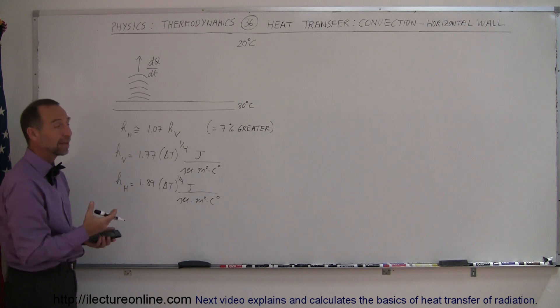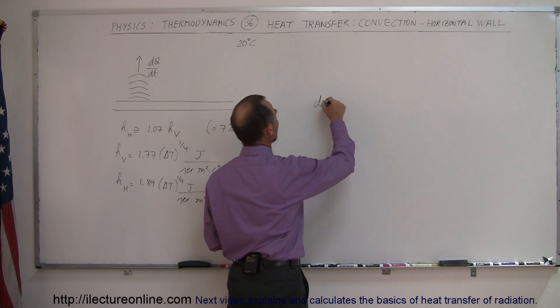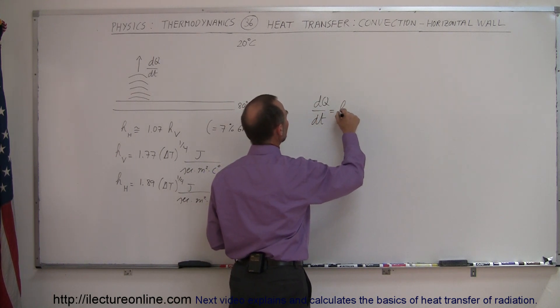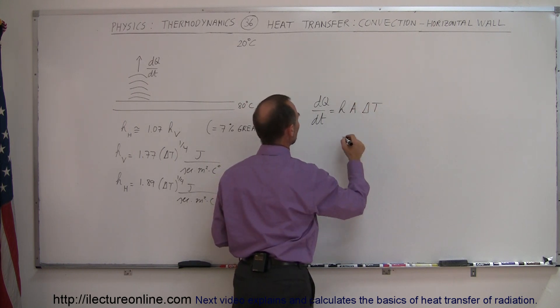All right, so let's say in this particular case, what would be the dQDT for a horizontal wall? So when we come up over here, we say dQDT is equal to H times the cross-sectional area times the difference in the temperature.